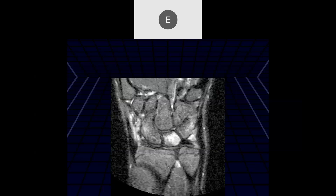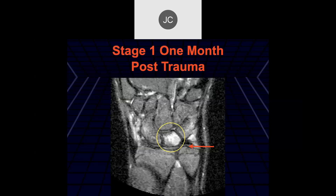Stage 1 Kienbock's: edema in the lunate with normal morphology and positive ulnar variance. At this stage it's typically not seen by x-ray. There's higher risk with both positive and negative ulnar variants. With positive ulnar variance, the ulna impacts against the lunate; with negative ulnar variance, it's usually the edge of the radius that impacts and concentrates stress on the lunate — this is called ulnar abutment syndrome.